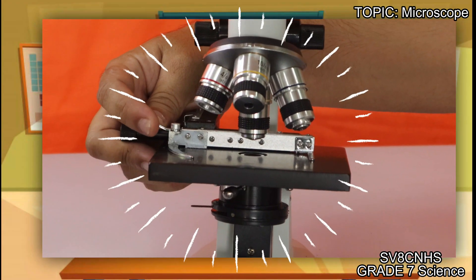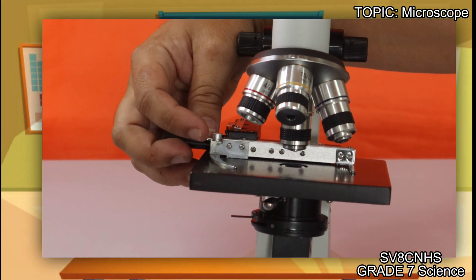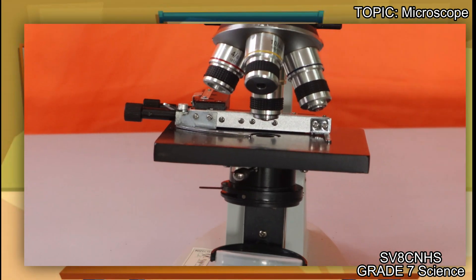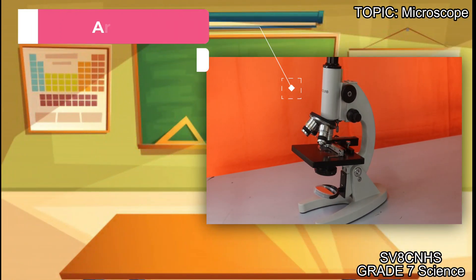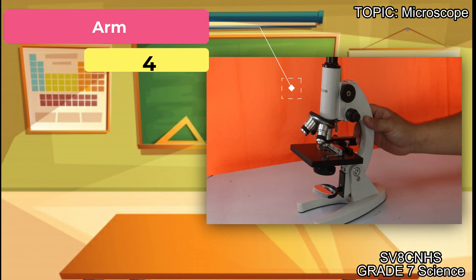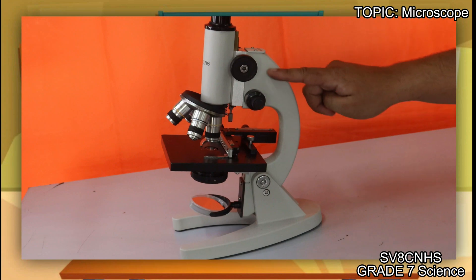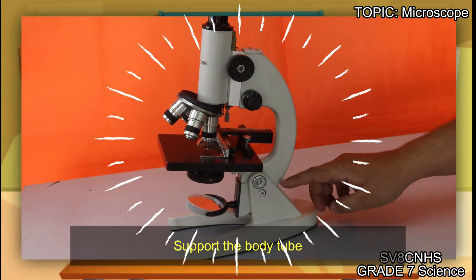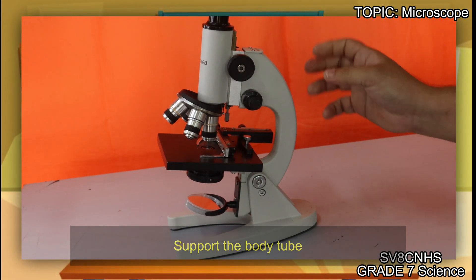As you can see, it is adjustable because when we place our slide here, it won't fall off — that's the function of why it clips. The next part of our compound microscope is what we call the arm. This part is the arm of our compound microscope. Its function is very simple: it simply supports our body tube.